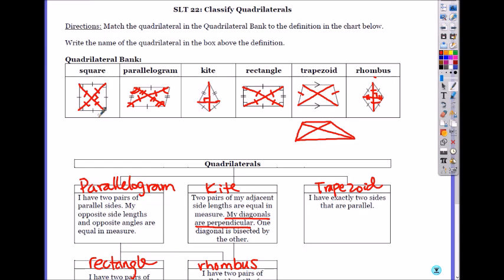And there are only two quadrilaterals that have equal diagonals: square and rectangle.